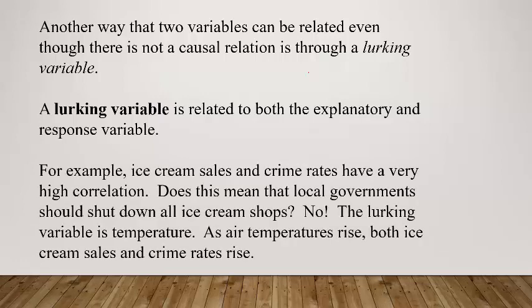For example, ice cream sales and crime rates have a very high correlation — when ice cream sales go up, crime rates go up. Does that mean local government should shut down all ice cream shops? No. The lurking variable is temperature: as temperature rises, both ice cream sales and crime rates rise. But if you just plot ice cream sales versus crime rate, you'd see a high correlation between them.